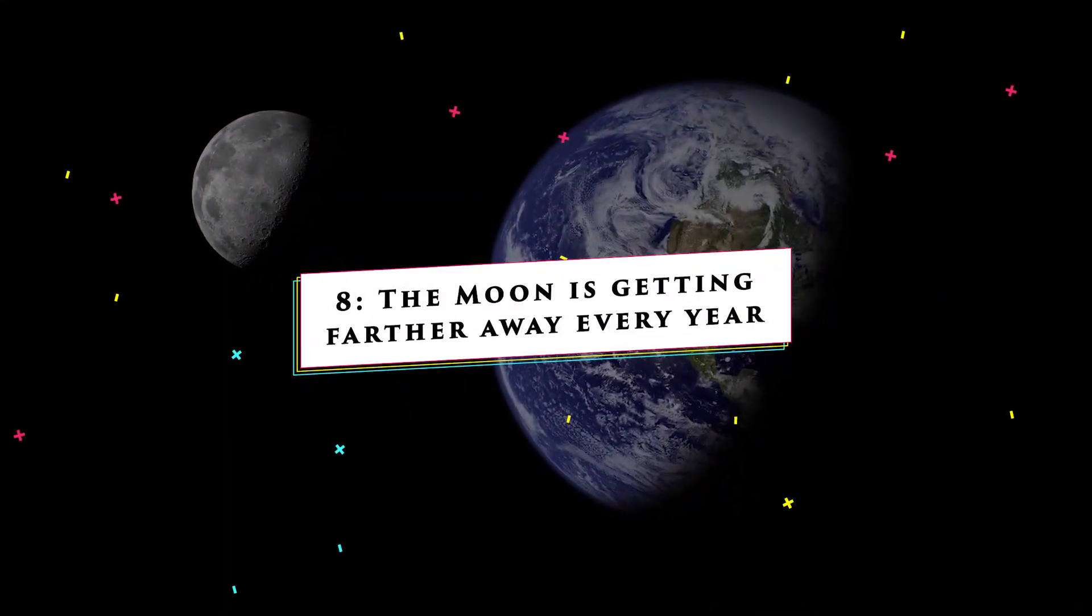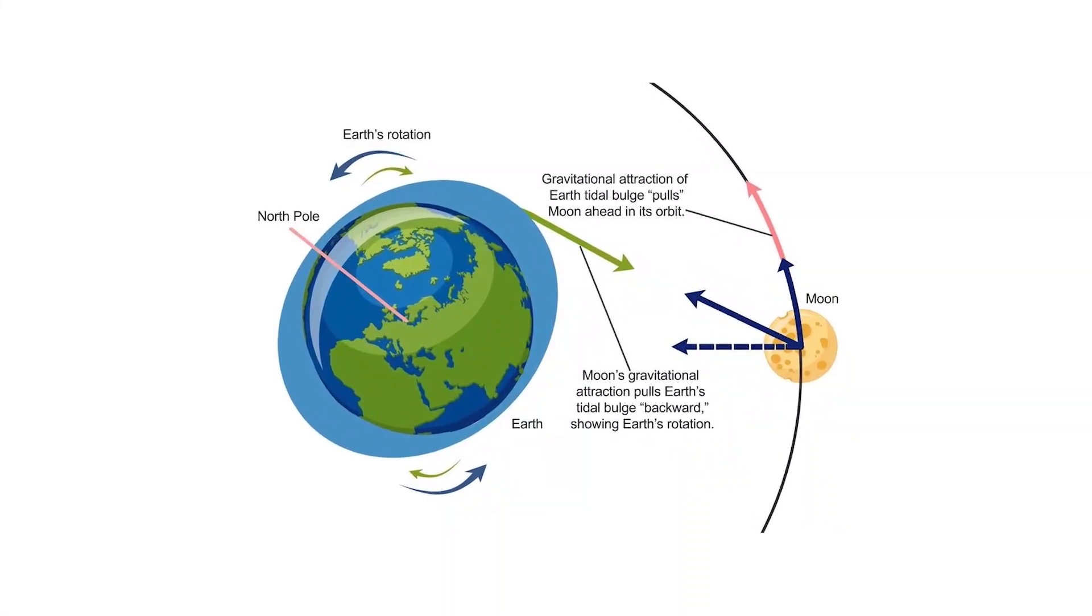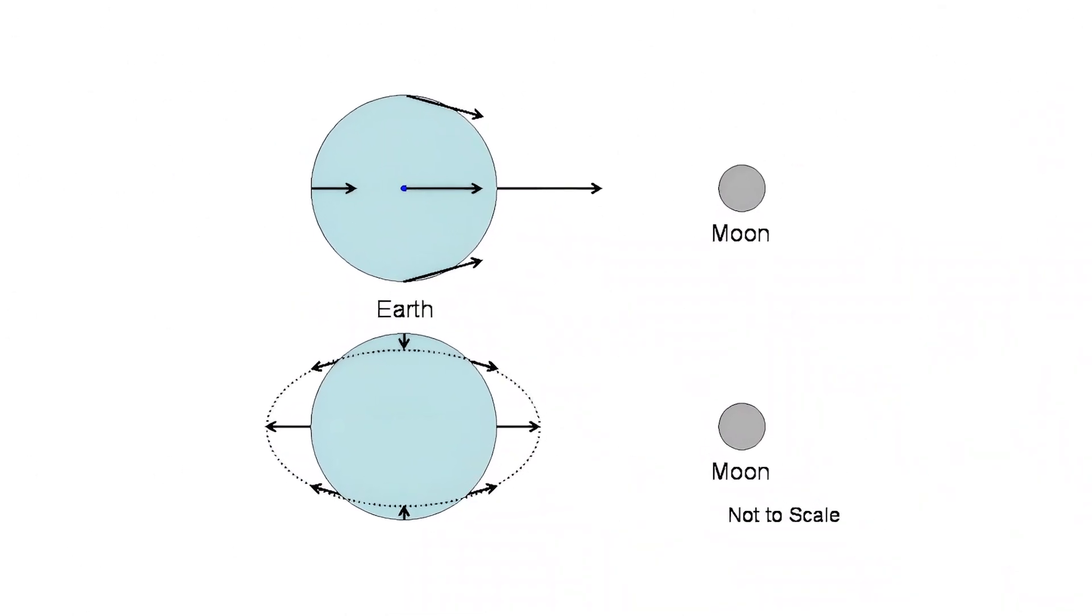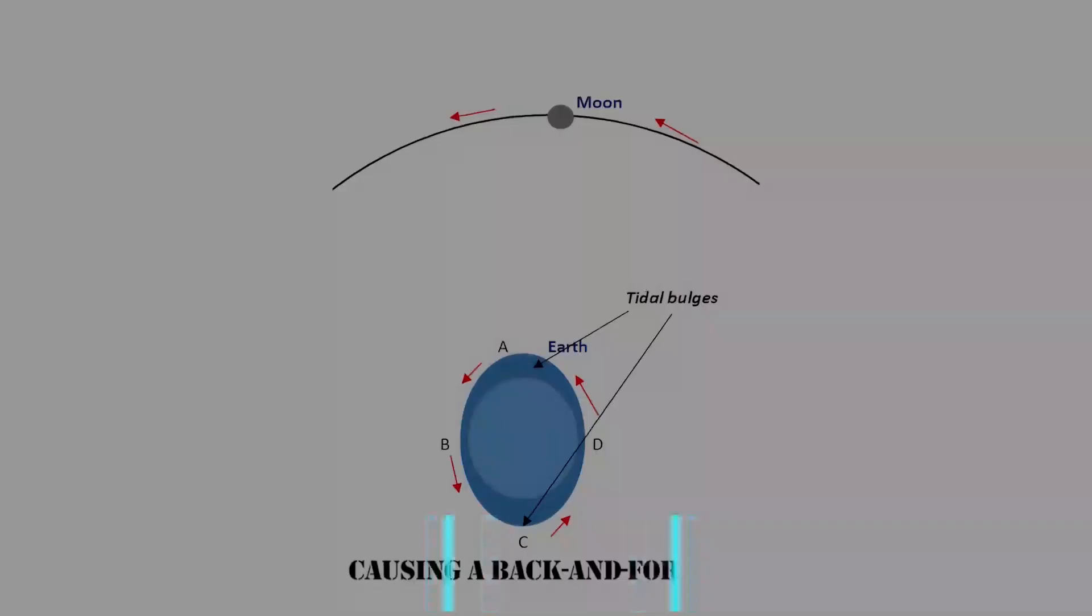The moon is getting farther away every year. The gravitational pull of the moon on Earth results in tides and stretches our planet into the shape of an egg. The tidal bulge moves slightly ahead of the moon's orbit because Earth rotates faster than the moon does, causing a back-and-forth tug.